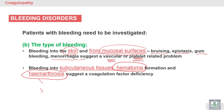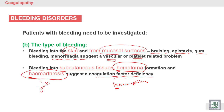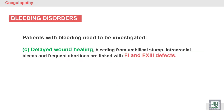Bleeding into joints — hemarthrosis — and hematoma suggest hemophilia or other coagulation factor deficiency. We have 13 coagulation factors. Delayed wound healing is another important sign to note.